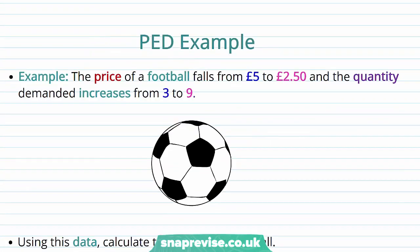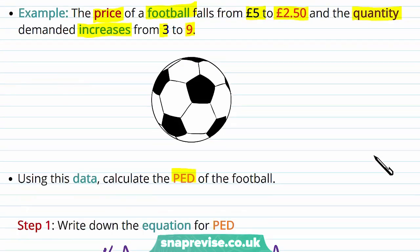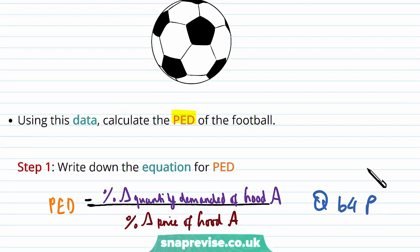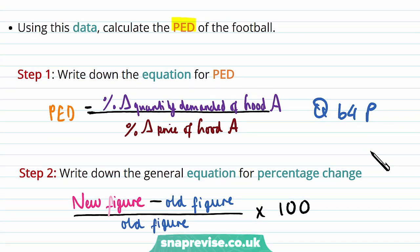Now let's do a complete example of PED. The price of a football falls from £5 to £2.50, and the quantity demanded increases from 3 to 9. Using these numbers, we're going to be able to calculate PED. The first step that we're going to take is to write down our equation for PED. Remember, it is going to be Q before P. Then the second step is going to be writing down our equation for percentage change, which is the new figure minus the old figure all divided by old figure times 100. The times 100 puts it in percentage terms.